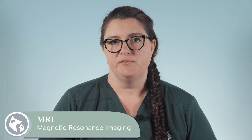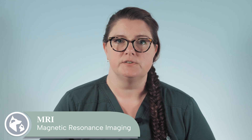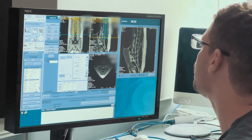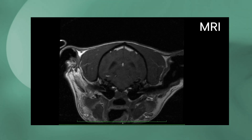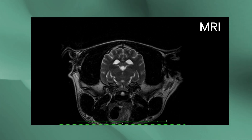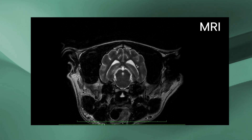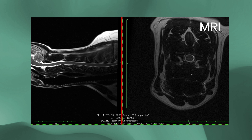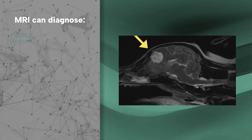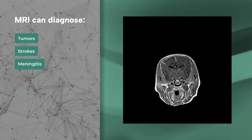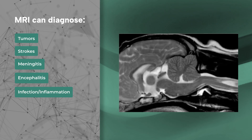MRI is a non-invasive, pain-free way of looking at the internal structures of the body and is the advanced imaging modality of choice for examining soft tissues, especially for the brain and the spinal cord. MRI technology enhances tissue structures using multiple types of pulse sequences that accentuate various types of tissues in multiple planes, providing much better resolution of soft tissue structures. Therefore, MRI can show many disease processes including tumors of multiple sizes, strokes, meningitis, encephalitis, infection, and inflammation.